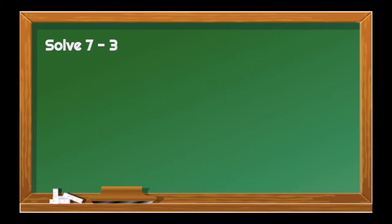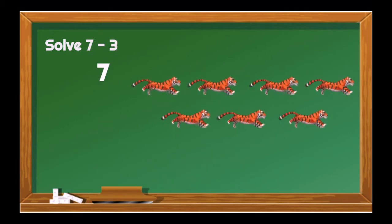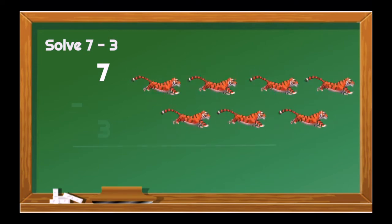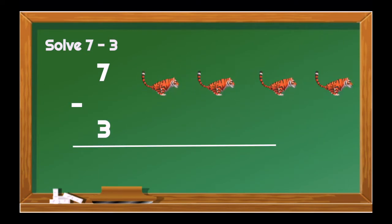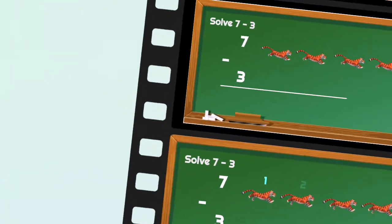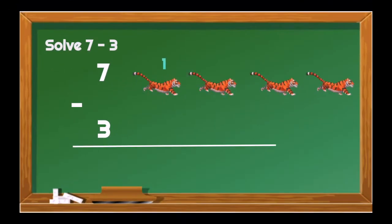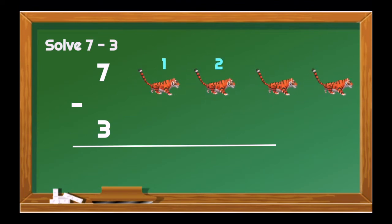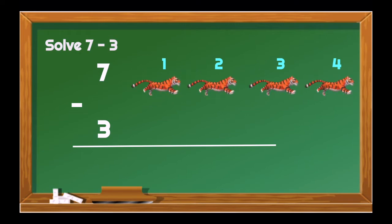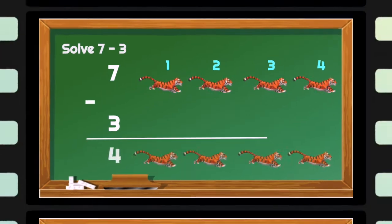Our next item is 7 minus 3. We have 7 tigers. Then we need to take away 3. How many tigers will remain? Let's count on: 1, 2, 3, 4. So, 7 minus 3 is equal to 4. That's the way!